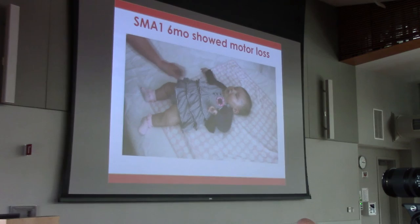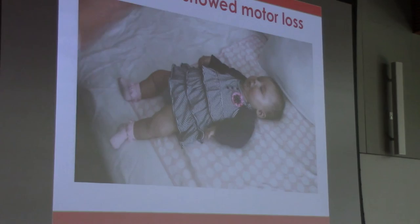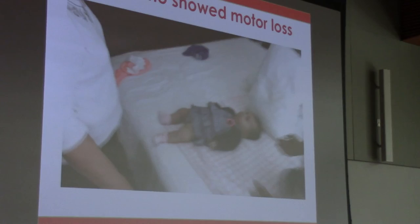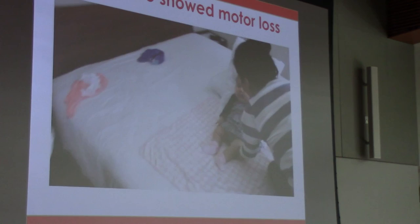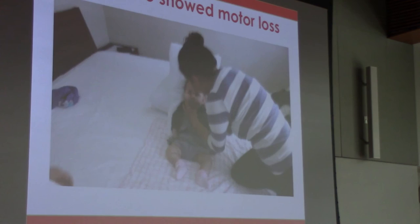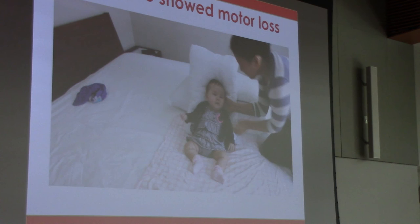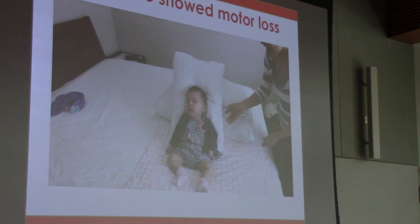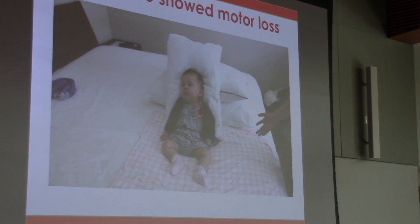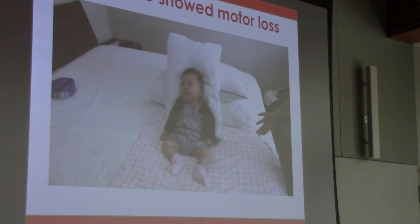Here is our very first patient before any treatment. You can see she does not move her legs at all. She can move her arms at the hands and elbows but not at the shoulders. She can only sit up briefly because sitting is hard — she loses the ability to breathe. At this age she was already getting breathing support at night with a BiPAP device. Without treatment she would have died or needed a breathing tube.